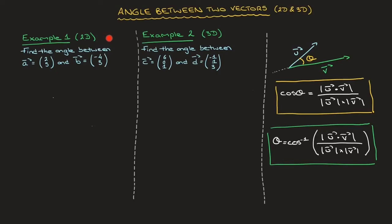The first example: we have to find the angle between vector a with components 2, 5 and vector b with components negative 4, 3. Using the formula we've just seen, we can state that cosine of the angle theta between a and b is equal to the absolute value of a dot b, over the product of the magnitude of a and the magnitude of b.